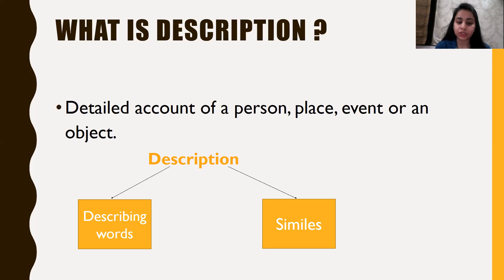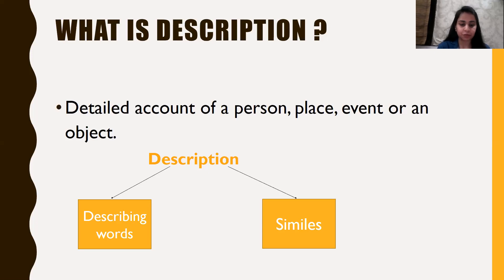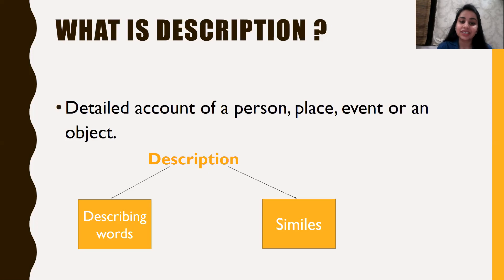It enables us to create an image. For describing something, we need to know two things: lots of describing words so that we can create a perfect image of the person with our words, and second, similes. We all know what similes are — when we compare two things by using the word 'like' or 'as.' For example, 'her cheeks are like apples' or 'he is as tall as a tree.' So these are similes — when we compare two dissimilar things using 'like' or 'as.'